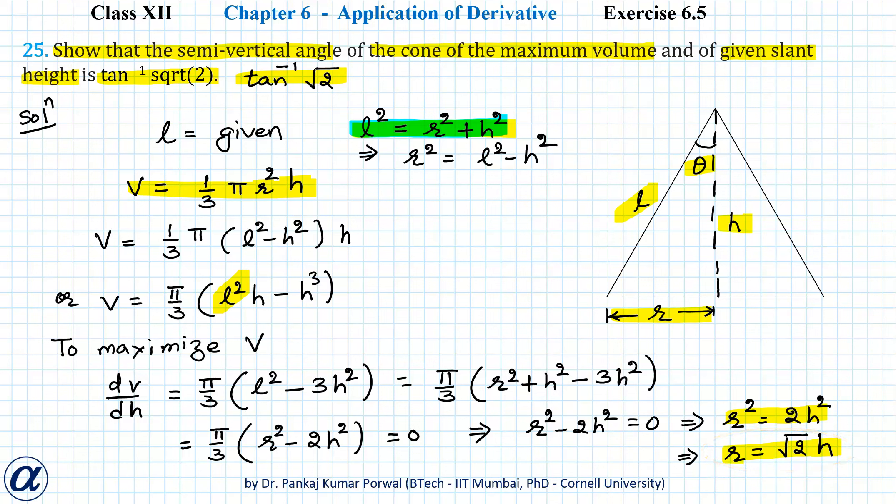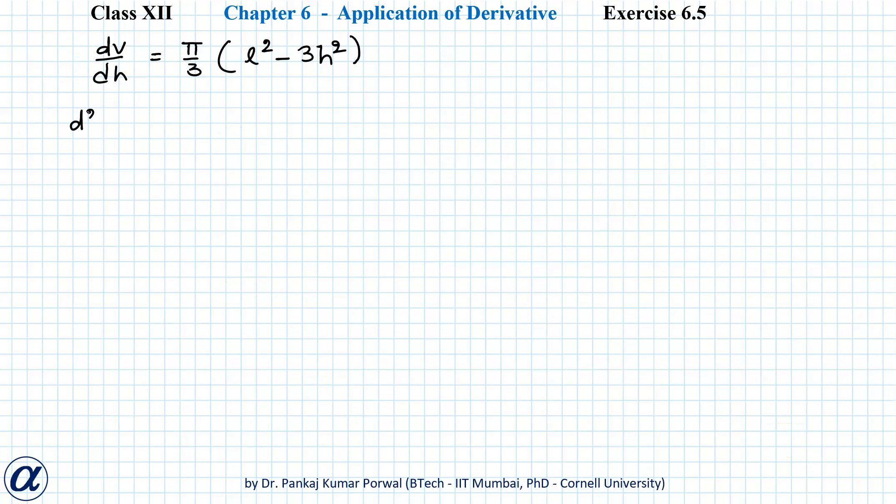of V. For that, I will use this expression because this one has l and h where l is constant and h is variable. I should avoid using this expression because in this expression both r and h are variables. So d²V by dh² will equal π by 3 times (the derivative of l squared will be 0 because it is constant) minus 6h.